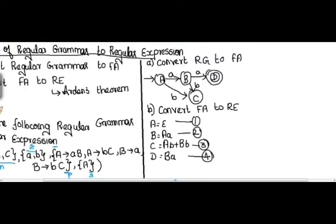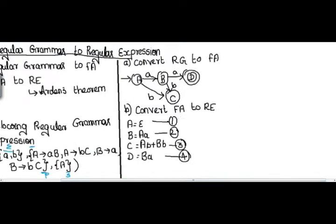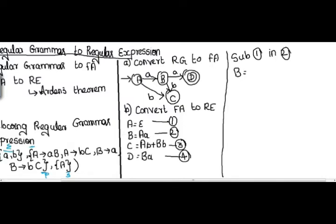I always find the regular expression from the final state. Here the final state is D, so I find the regular expression from state D. I check whether I can apply Arden's theorem or substitute directly. Looking at D = Ba — I still have capital B, so I go to the second equation. There I see capital A, so I substitute the first expression: B equals, instead of A I substitute null, and the remaining is 'a'. By identity rule 3 — null concatenated with a regular expression equals the regular expression — I get B = a.